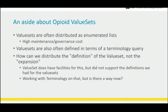An aside about opioid value sets: value sets are often distributed as enumerated lists, which has a high maintenance and governance cost. Ontologies like RxNorm provide a way to ask that question as an expression — give me all medications that have this ingredient — as opposed to just maintaining a list. But right now we distribute value sets mostly in that expansion form. From a practical perspective it's an easy solution rather than requiring a terminology server that can evaluate that expression, but there's a high cost involved.